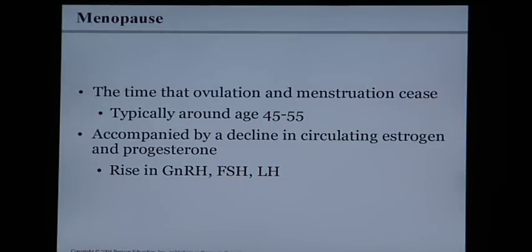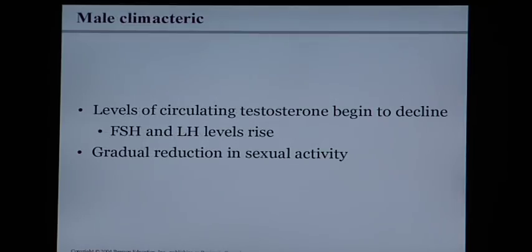Menopause is when ovulation and menstruation cease, typically around age 45–55, accompanied by a rise in some hormones and decline in others — causing symptoms like hot flashes, mood swings, and emotional moments. Typically estrogen and progesterone decline, but FSH and LH rise. Men have their own version called the male climacteric, when testosterone levels decline, FSH and LH rise, and there is a gradual reduction in sexual activity. This concludes chapter 28.